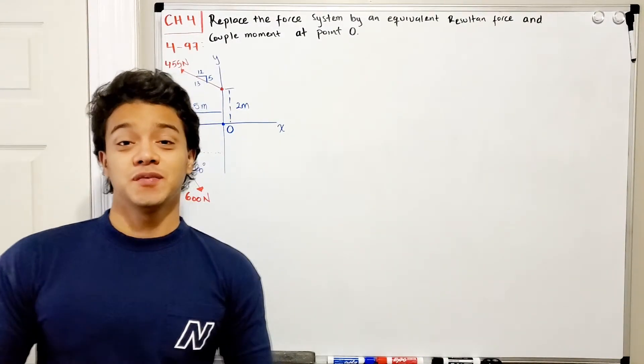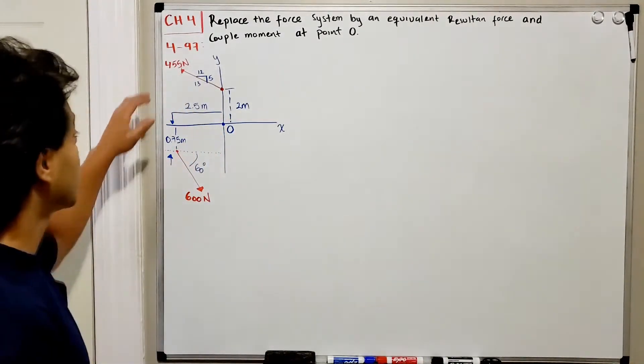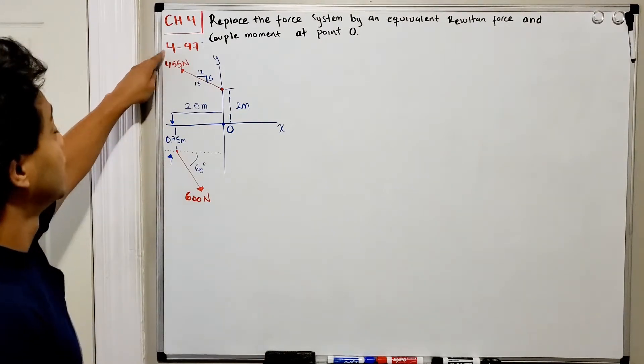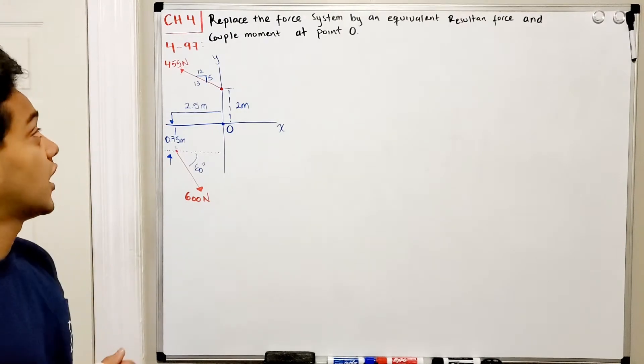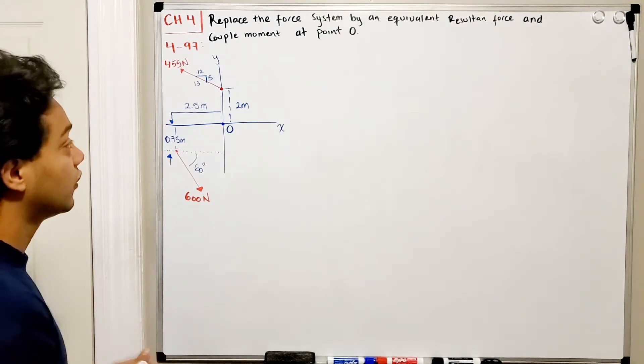Welcome back everyone to learning by teaching. We're in Stylix and we're going to do problem 4.97 of our book. It says replace the force system by an equivalent resultant force and couple moments at point O.